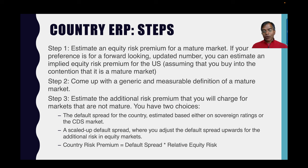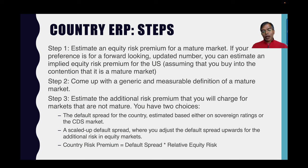I start by estimating an equity risk premium for a mature market, and when I tell you how I do it you're already going to start the pushback. I estimate a mature market premium by estimating an equity risk premium for the S&P 500, which I do at the start of every month and every year. I use the S&P 500 because to compute an implied equity risk premium — which is my starting point — I need numbers that are more easily available for the S&P 500 than any other market. So if I estimate an implied equity risk premium for the S&P 500 of five percent, that becomes my estimate for a mature market.